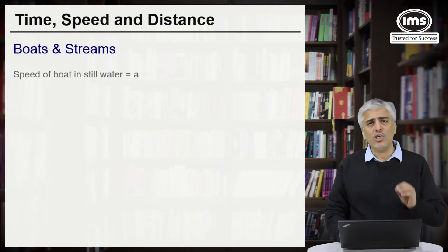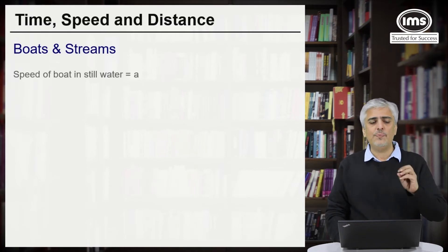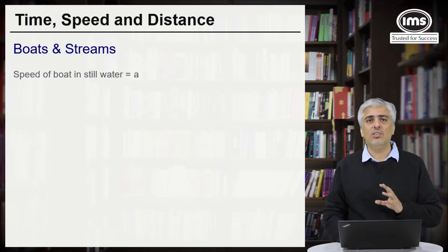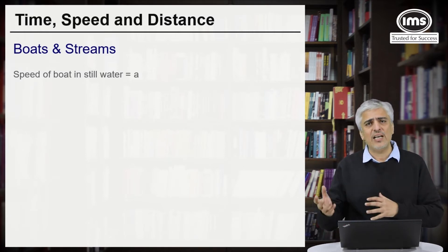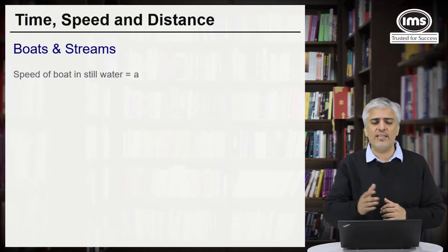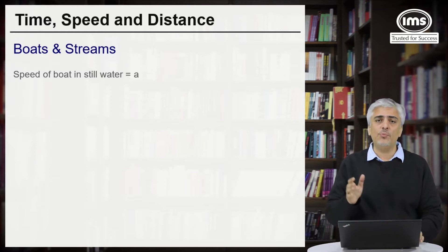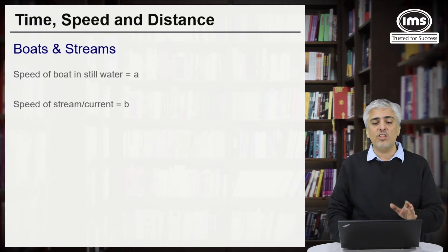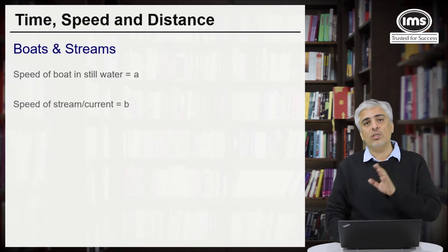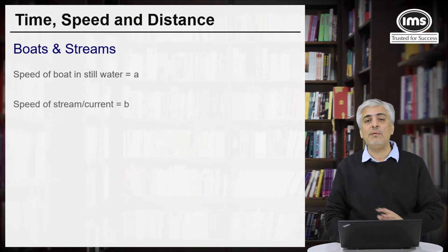Whenever we talk about boats and stream, we are going to take the speed of the boat in still water — that is when there is no current — as A. The speed of the stream or the current, whatever is given, will be B.